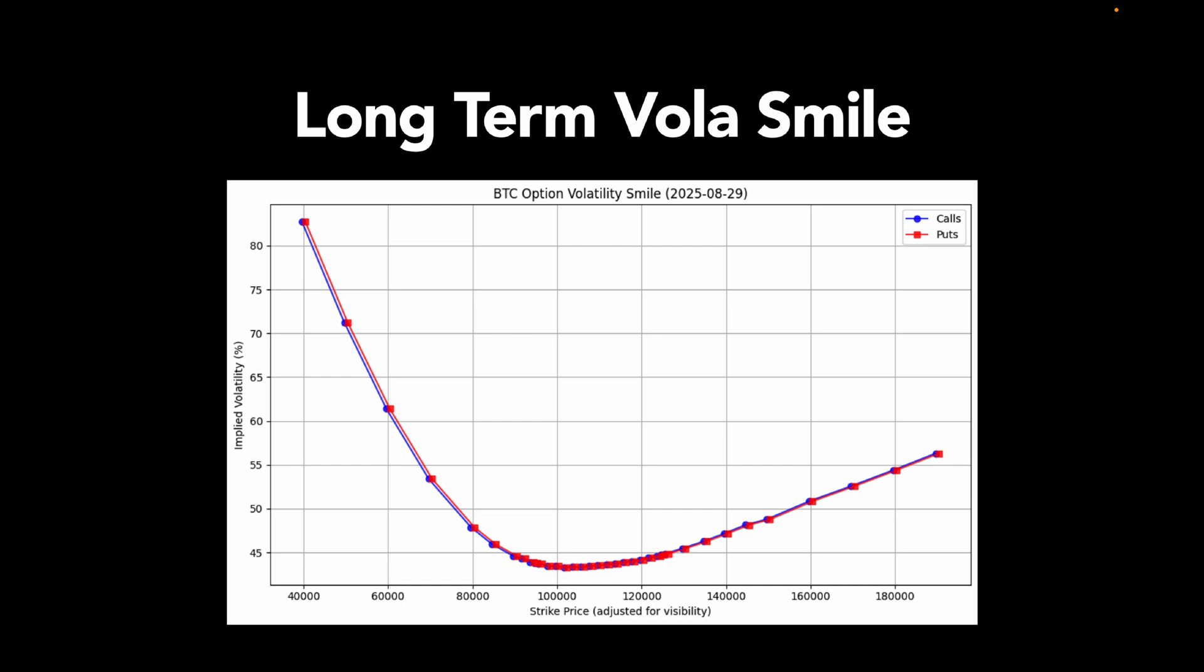So what does this smile tell us? It says, traders aren't panicking, but they're building in asymmetric tail risk. They're more worried about a sharp move down than a moonshot up. And over longer horizons, that's pretty typical, especially in uncertain macro environments.